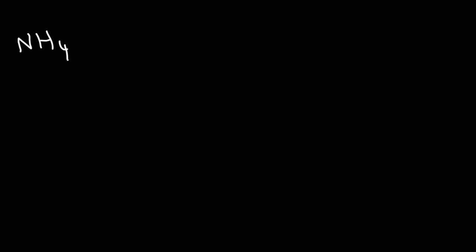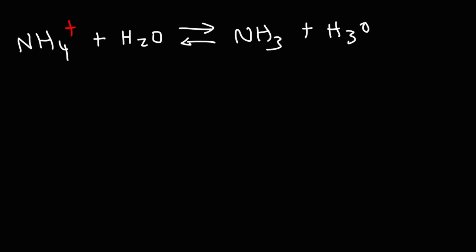Now you know how to determine if a salt or an ionic compound is acidic, basic, or neutral. Let's talk about why certain ions are acidic and why some are basic. Ammonium is a weak acid because when you put it in water, it ionizes with water, generating ammonia and the H3O+ ion (hydronium). This reaction is reversible, as indicated by the double arrows. Any ion that generates H3O+ in solution is considered an acidic ion, because it will cause the pH to be less than 7.